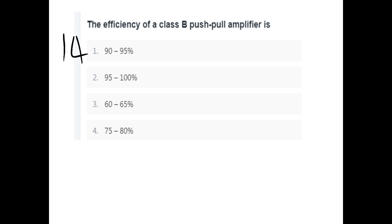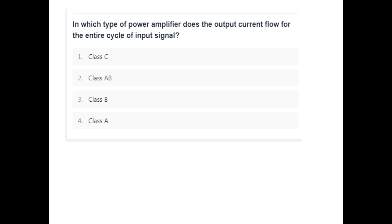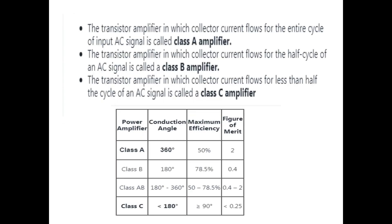The efficiency of a class B push-pull amplifier is 75 to 80%. In a class A power amplifier, the output current flows for the entire cycle of the input signal. Class A conduction angle is 360 degrees. Class B is 180 degrees. Class AB is 180 to 360 degrees. Class C is less than 180 degrees.